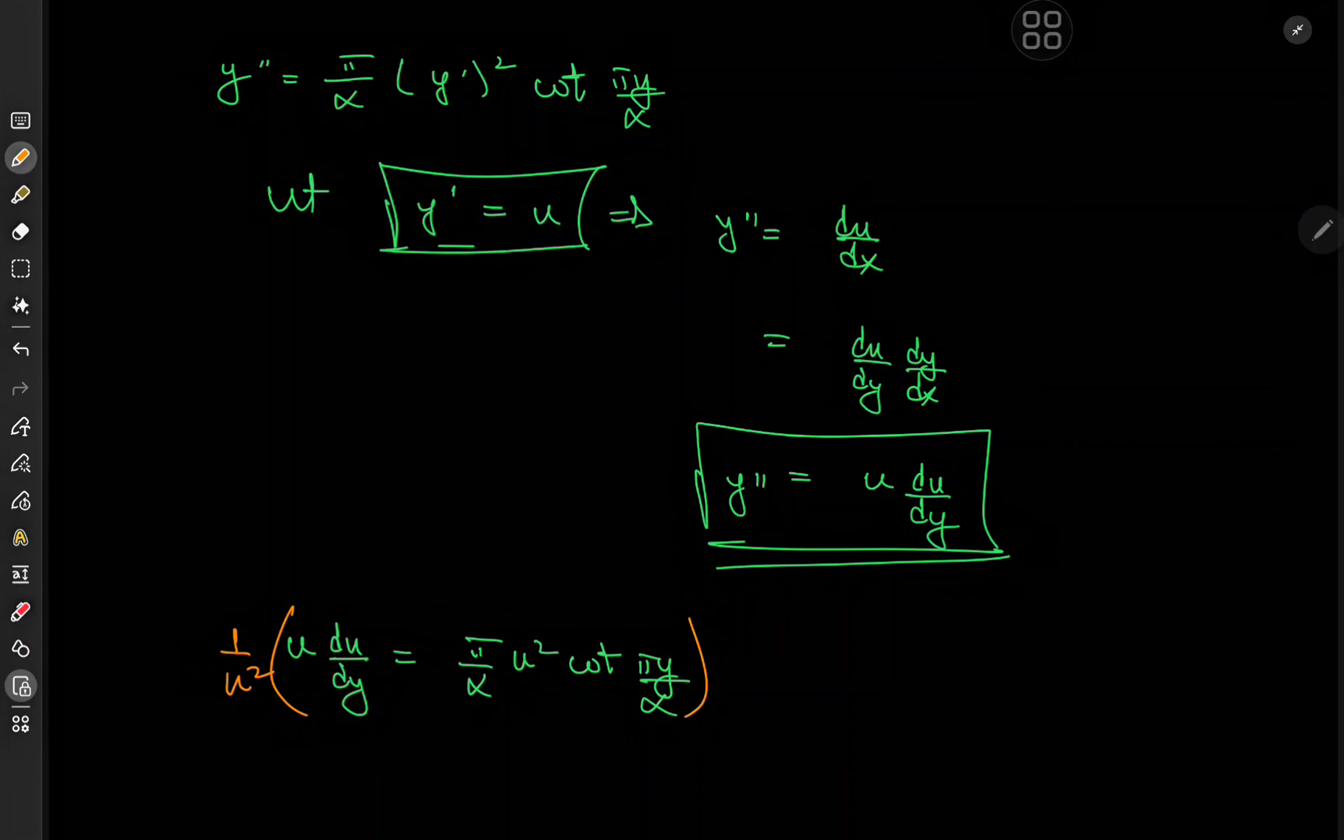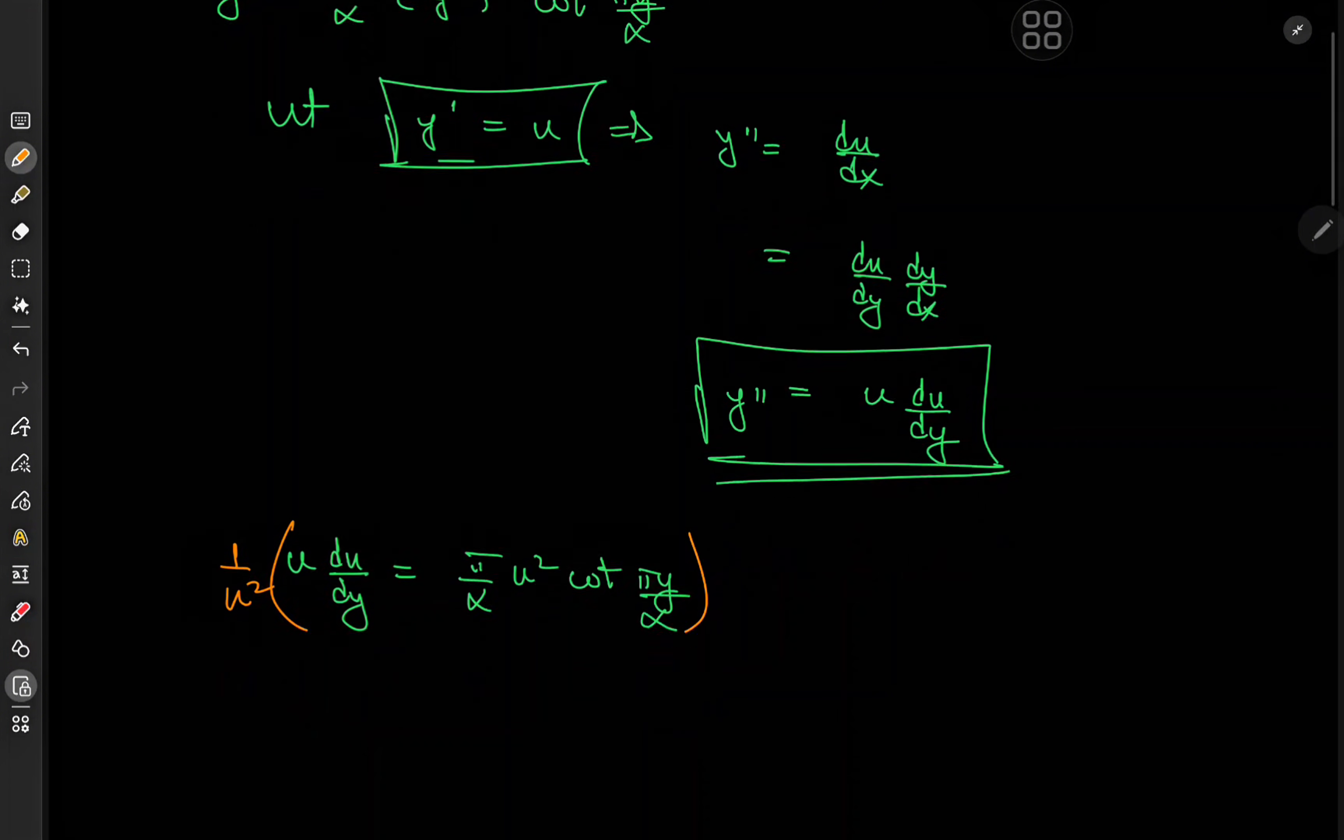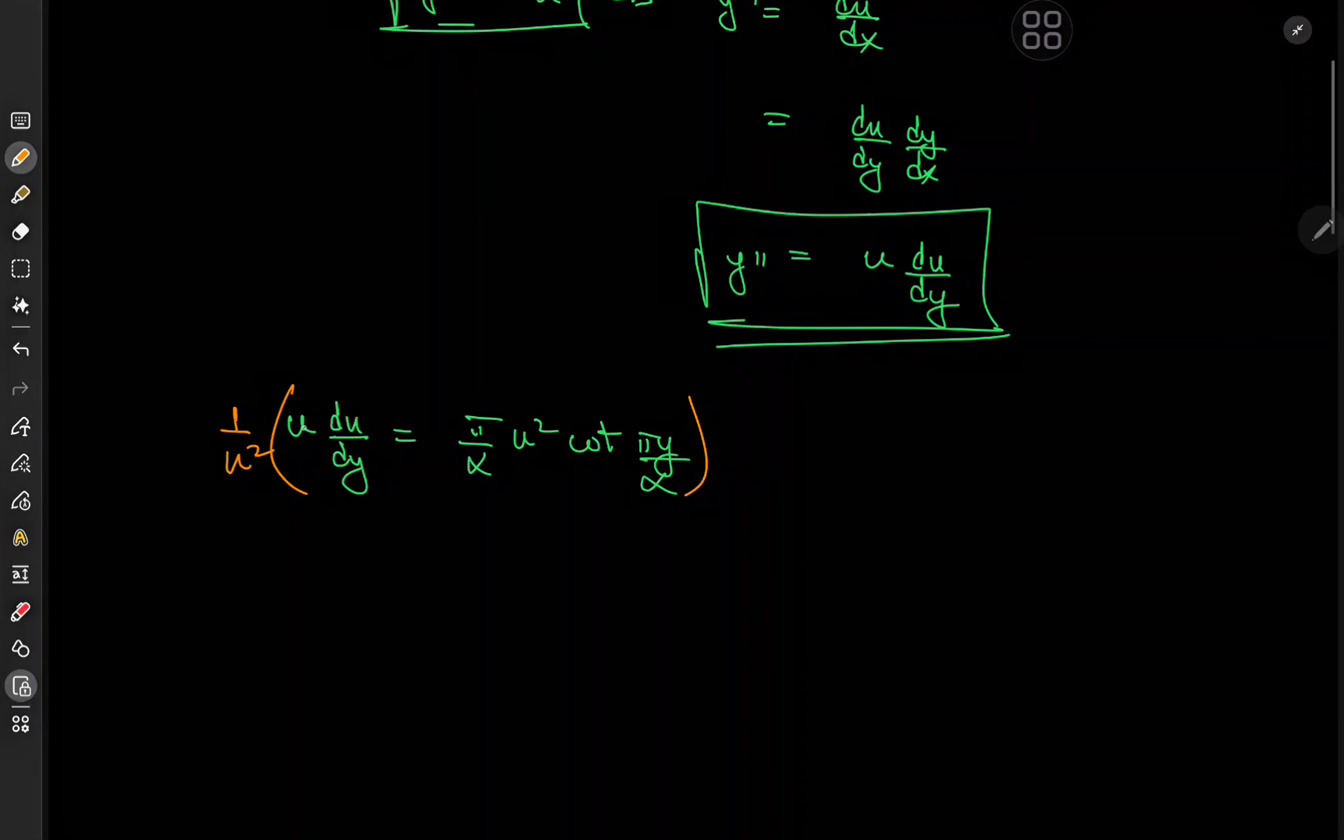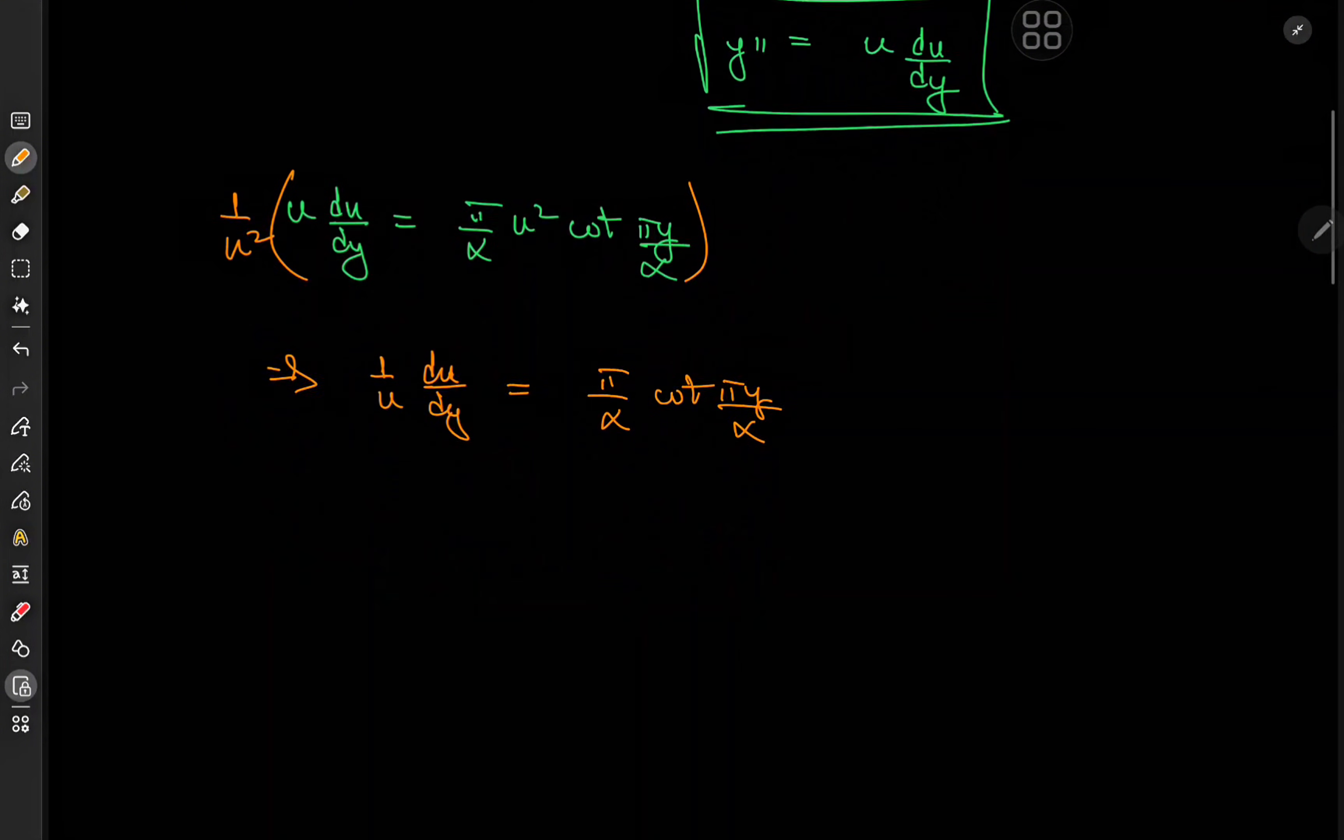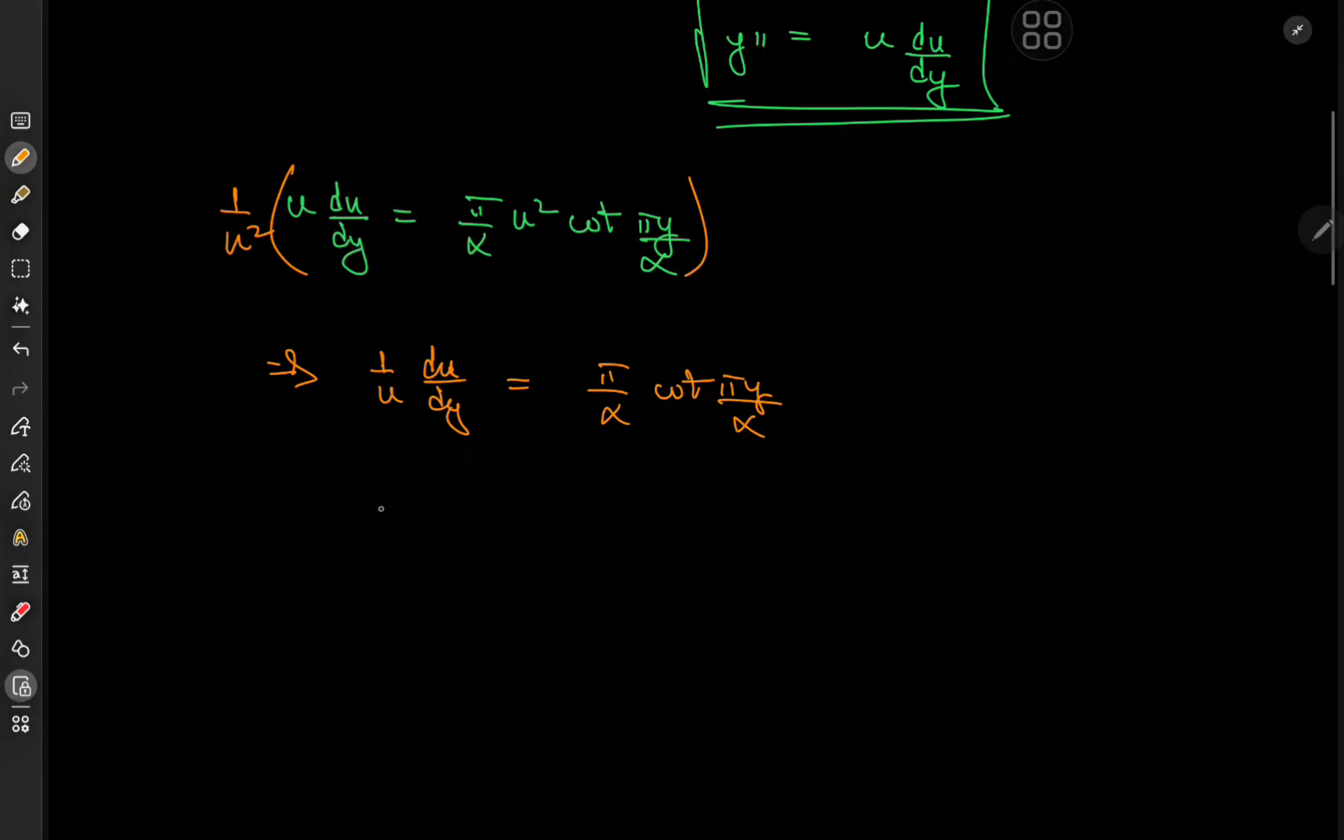Again, trivial solution, zero equal to zero. The point is, we can cancel out the u terms, and hence we have 1 over u du over dy equal to pi over alpha times the cotangent of pi y over alpha, which is a nice separable differential equation.